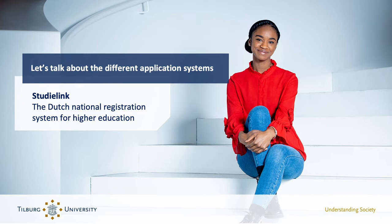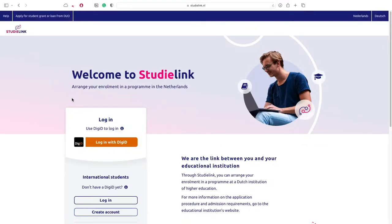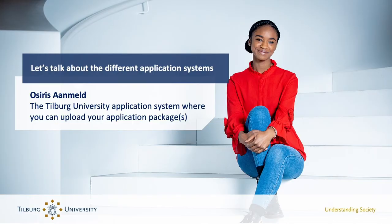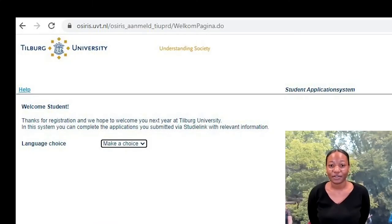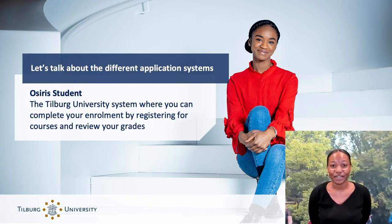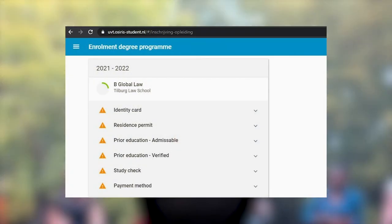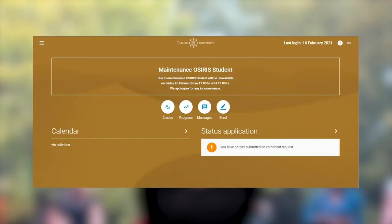First, there's StudiLink, the Dutch national registration system for higher education. To start your application, you will first need to register in StudiLink. Then there's OSIRIS, which is the main information system here at Tilburg University. OSIRIS AdMelt is the application system necessary to upload all your application documents. Then there is OSIRIS Student, which is only necessary once you've been admitted, where you can complete your enrollment and also register for courses or review your grades.